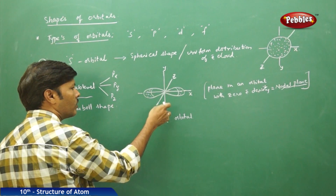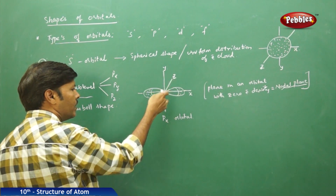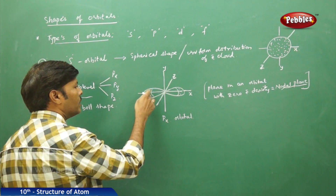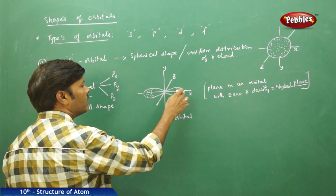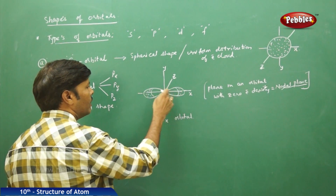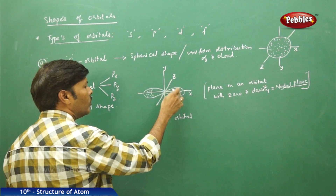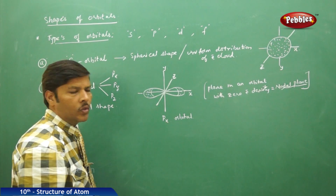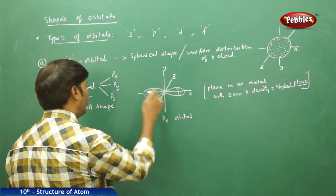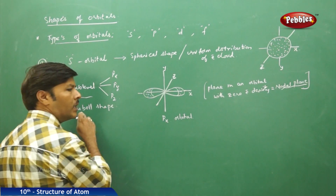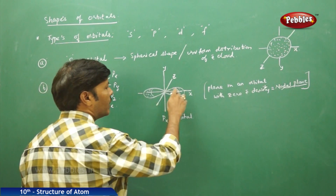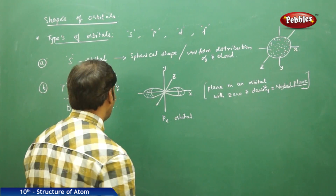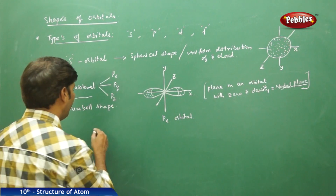In the px orbital, the y-axis and z-axis have no electron density, making them nodal planes. The electron density is present along the x-axis, with two lobes joining together to form a dumbbell oriented along the x-axis.